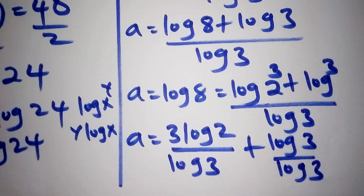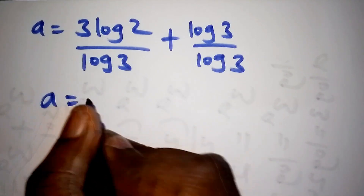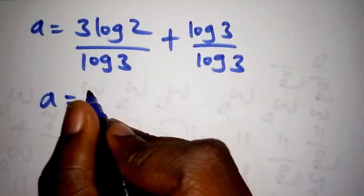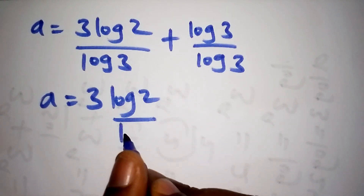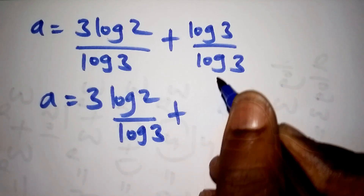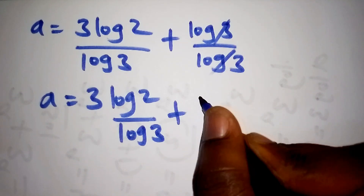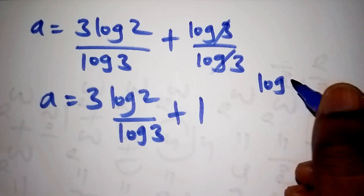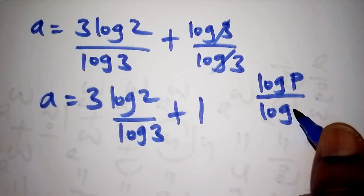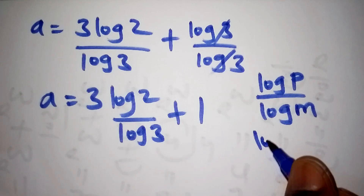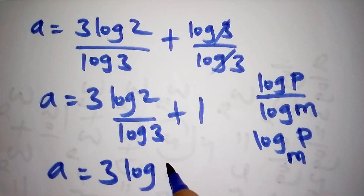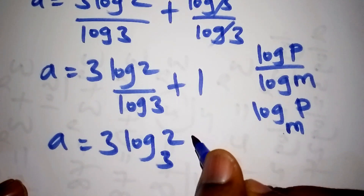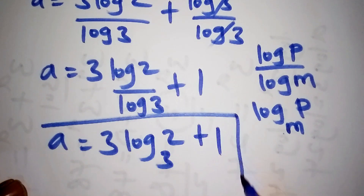So now, the log of p all over the log of m can also be written as the log of p to the base of m. Similarly, our a shall be written as 3 times the log of 2 to the base of 3, then plus 1. So these now qualify to be our correct answer.